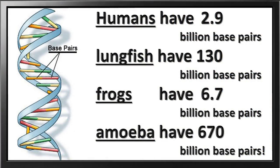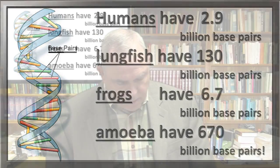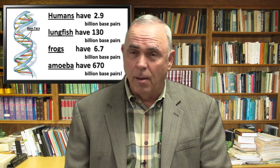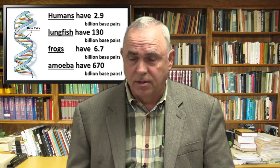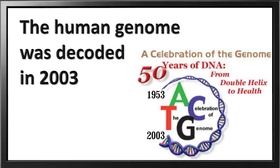Maybe the number of base pairs is different? Well, that doesn't work either. Humans have an estimated 2.9 billion base pairs; a lungfish has 130 billion; a frog has 6.7 billion; and a particular amoeba has 670 billion. So the number of base pairs doesn't determine the complexity of the organism either. I just thought that was interesting to note when looking across organisms.